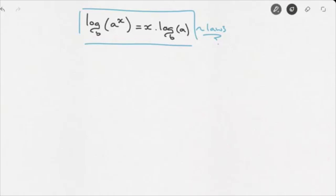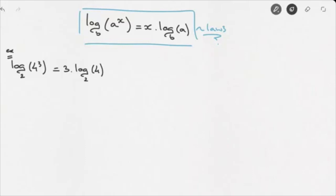Let's see how we can use this. For instance, we're asked to calculate log base 2 of 4 raised to the power of 3. Using this third law of logarithms, we can say this equals 3 times log base 2 of 4. Since log base 2 of 4 is equal to 2, this equals 3 times 2, which equals 6.